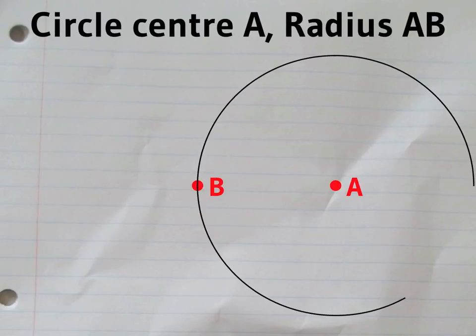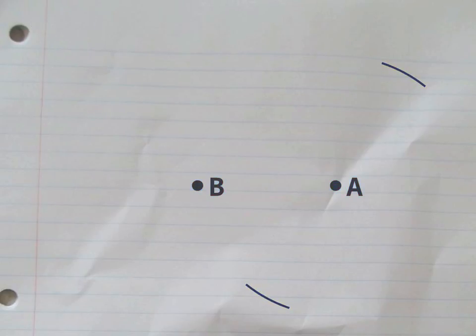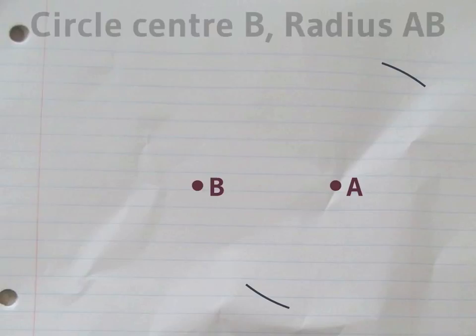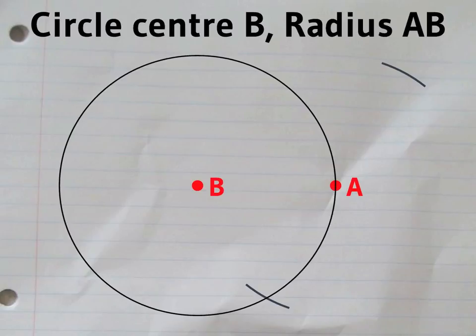First, draw this circle centered on A, radius AB. Then draw a circle with the same radius, centered on B.